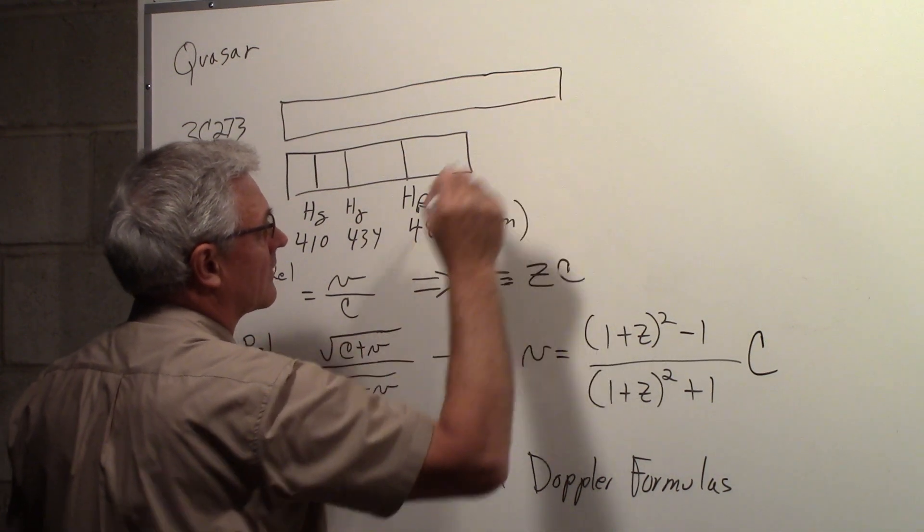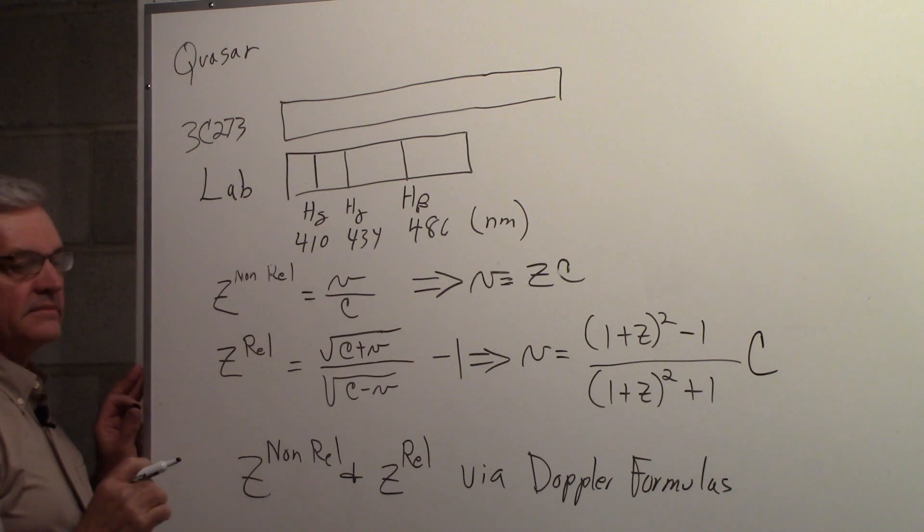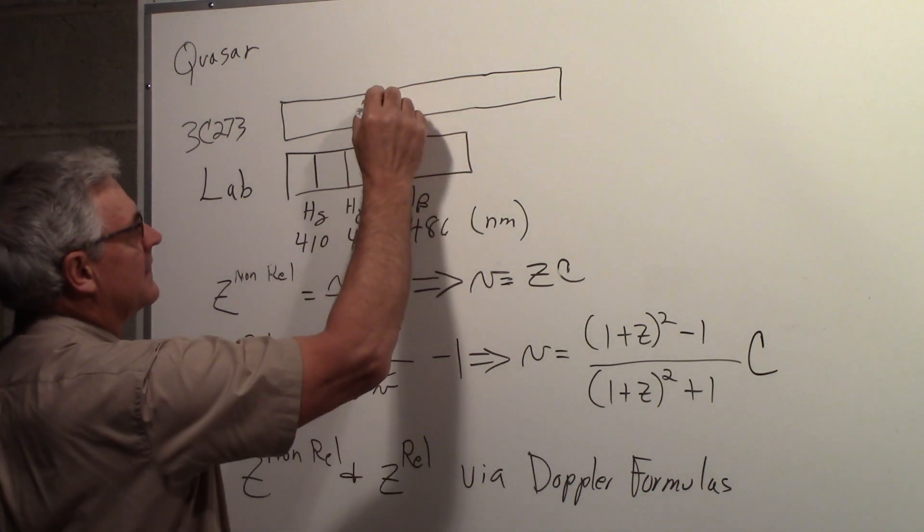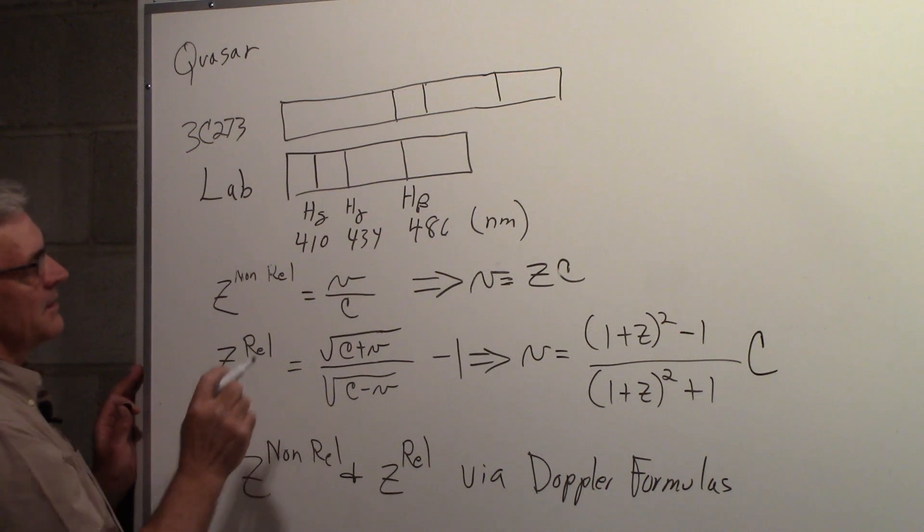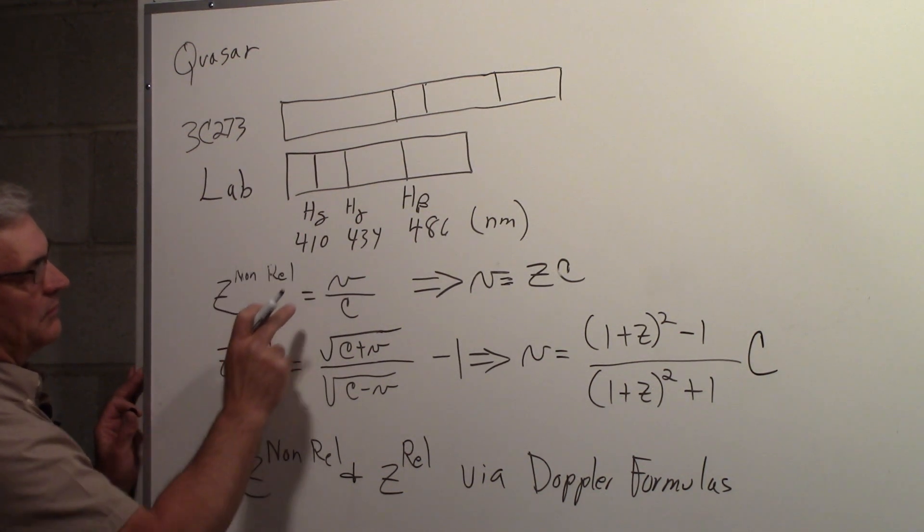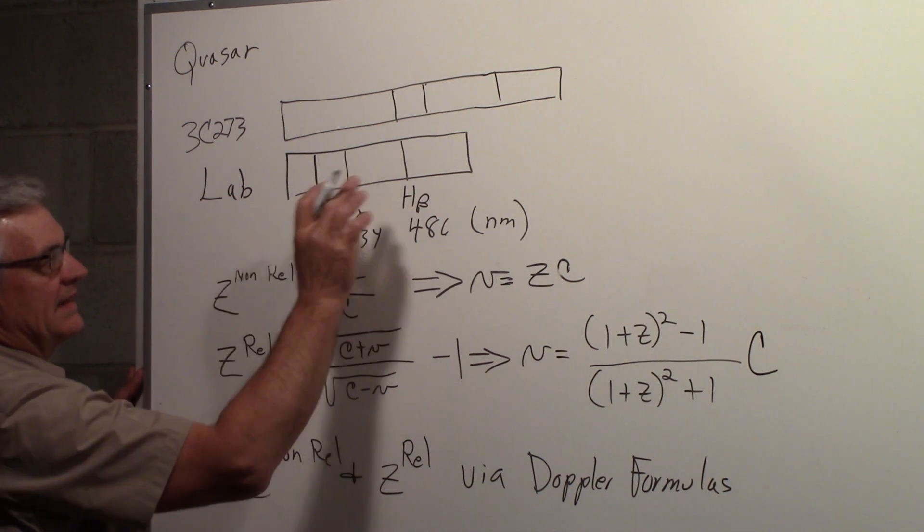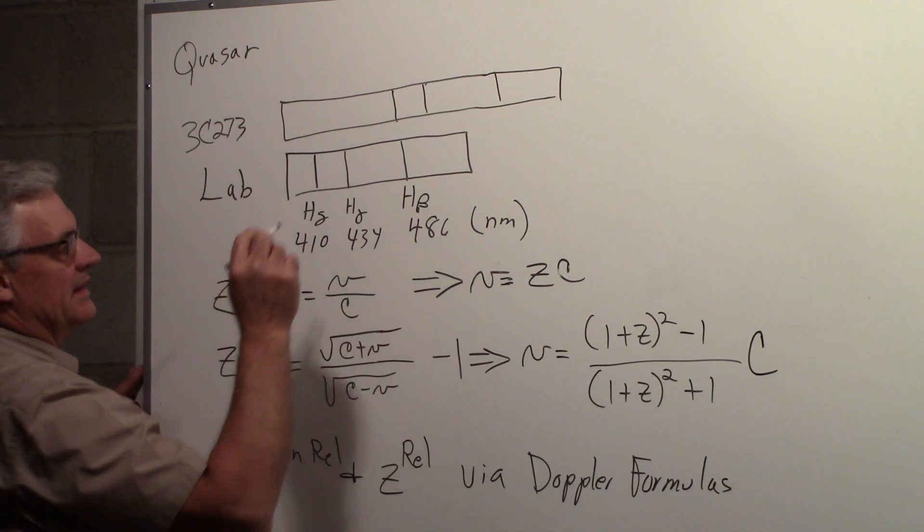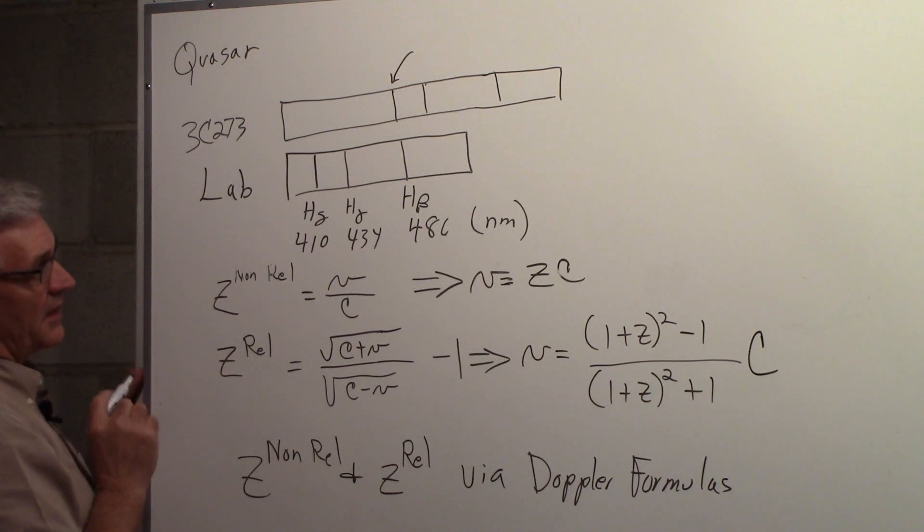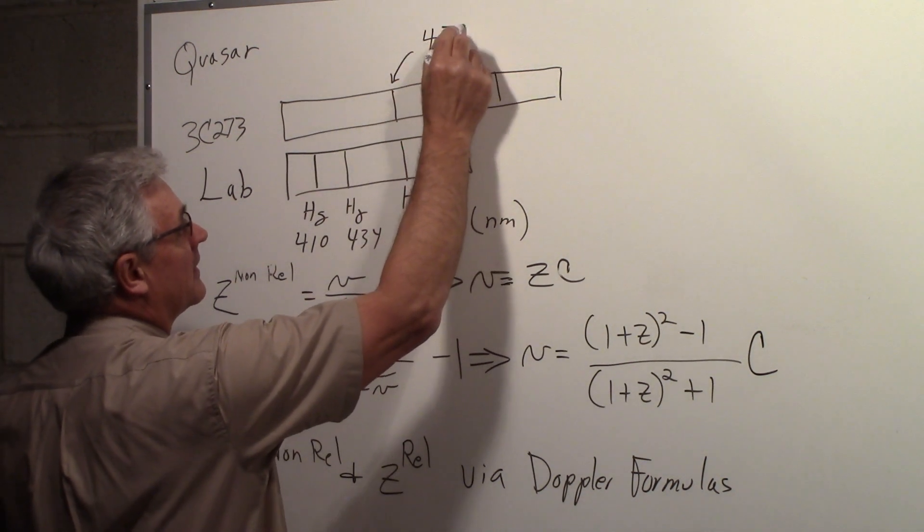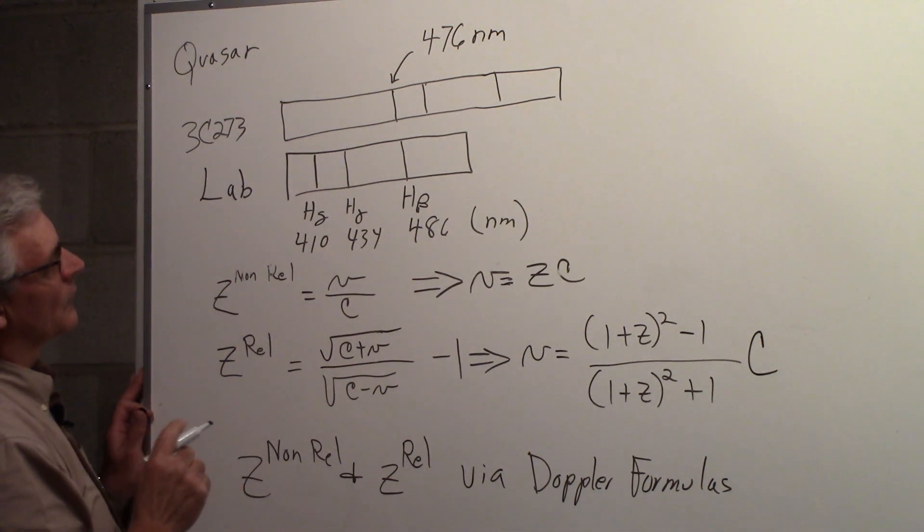And what will happen, because the light from that quasar passes through expanding space, the lines will be shifted. And these lines will appear something like this. So this H delta line, which was 410 nanometers here, when we look at that spectrum of the quasar, it's at a new wavelength. It's been shifted towards a longer wavelength, corresponding to the cosmological redshift, and the value of that is 476 nanometers, roughly speaking.